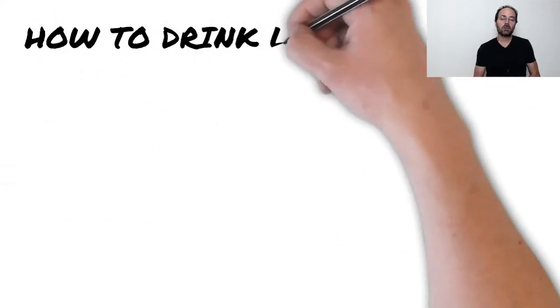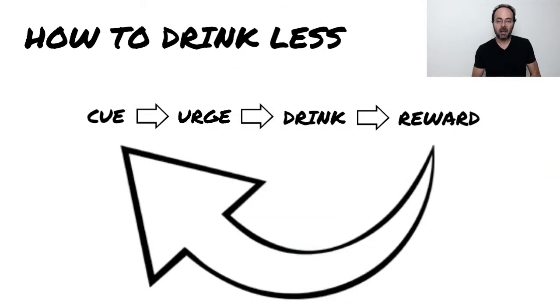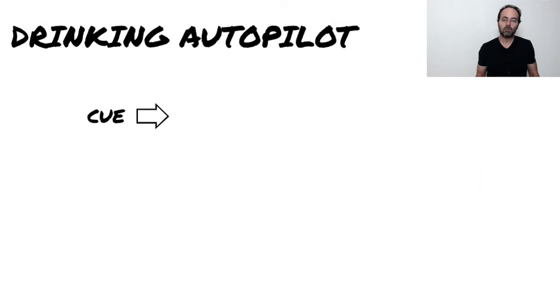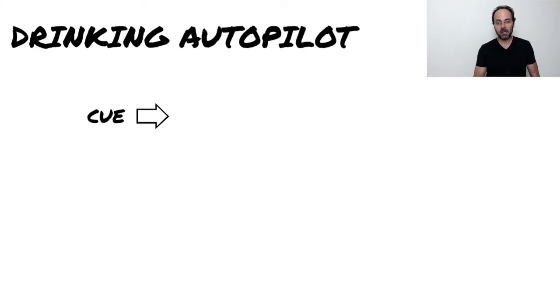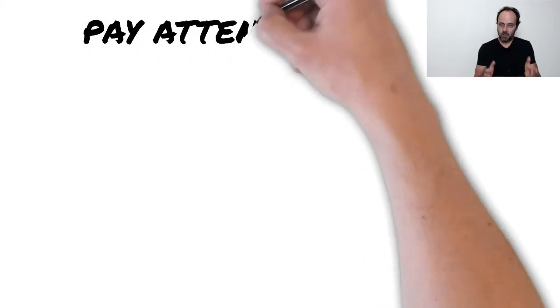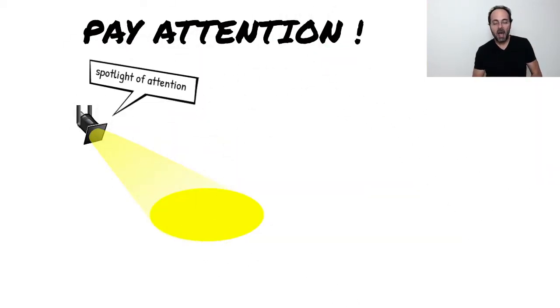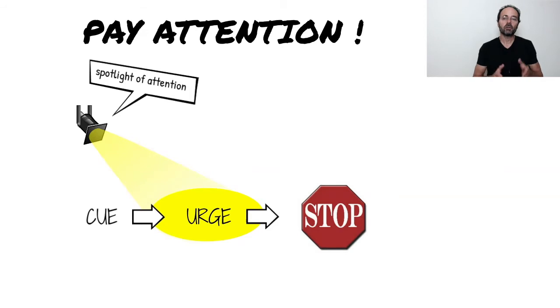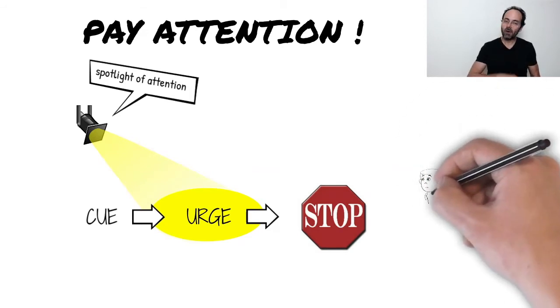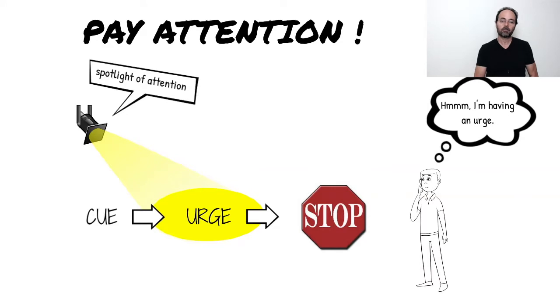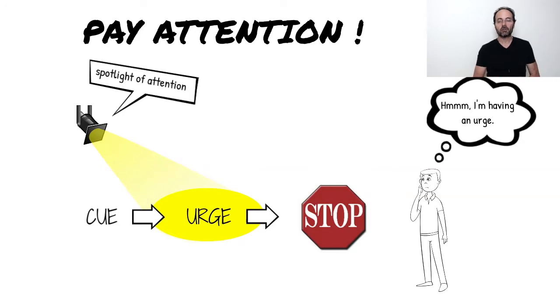So to drink less is simple — you have to begin interrupting that cycle before you drink. Most of the time you're running through this cycle more or less unconsciously. Beer 30 comes along and you find yourself with a beer in your hand. The first step in cutting back then is that you harness your attention. You have to know this cycle is going to happen and use that attention to stop yourself when you feel the urge and not just follow it automatically into the action of drinking.